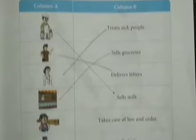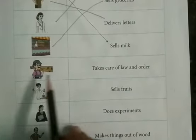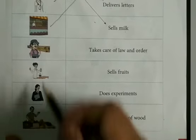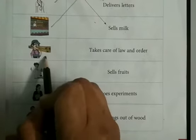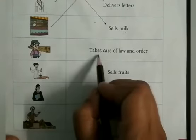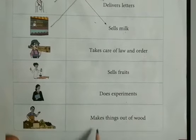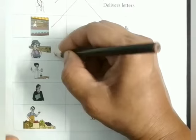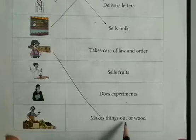Carpenter. Now here are four more pictures. Check the pictures: carpenter, scientist, lawyer, and fruit seller. So first we will check the correct option for this picture, carpenter. There are four options: takes care of law and order, sells fruits, does experiments, or makes things out of wood. Yes. I think this is the correct option. So we will match this picture with this option. Carpenter makes things out of wood.